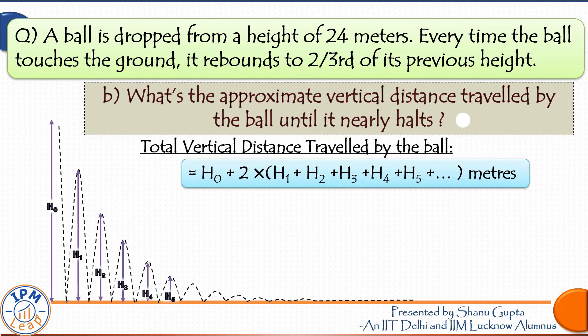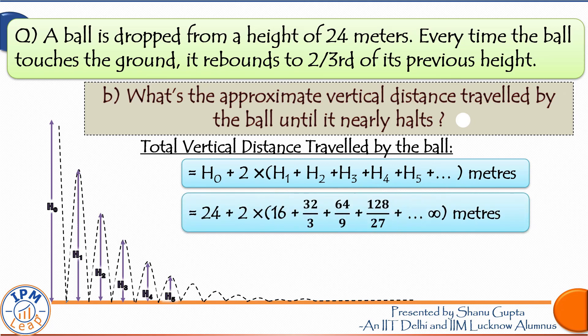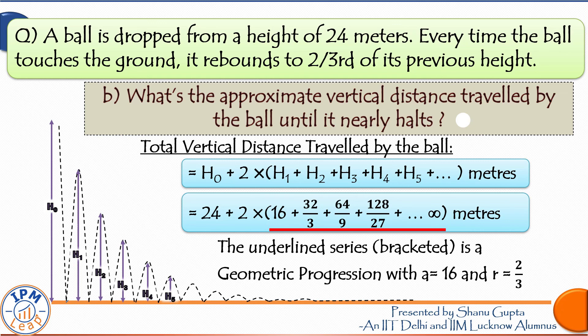So every subsequent distance will be 2 times the height attained. 2 times h1, 2 times h2, 2 times h3 and so on. Therefore, the total vertical distance covered by the ball will be 24 plus 2 times brackets 16 plus 32/3 plus 64/9 plus 128 over 27 plus so on up to infinity meters. Now as we discussed in part A of this question, the numbers in the underlined sequence follow the pattern of a geometric progression.